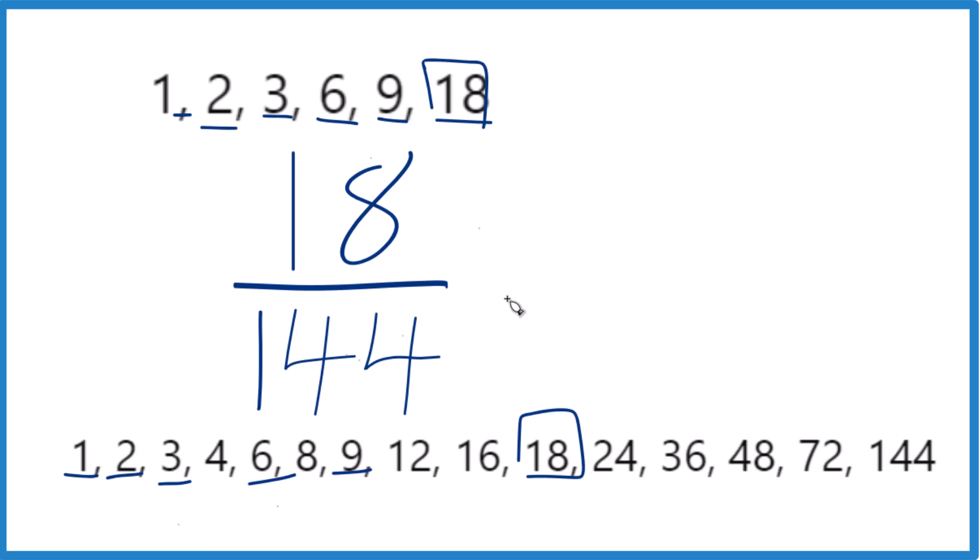So we divide 18 by 18, we get 1. And if you divide 144 by 18, you get 8.